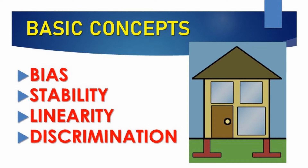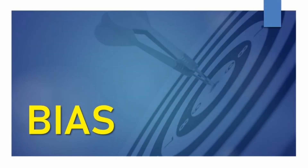What is bias? Bias is when our measurements are shifted from the target. If we are throwing darts, like we are showing here, and the center is the target — if your throws are shifted to one side, you have bias. So your measurement system may have bias.